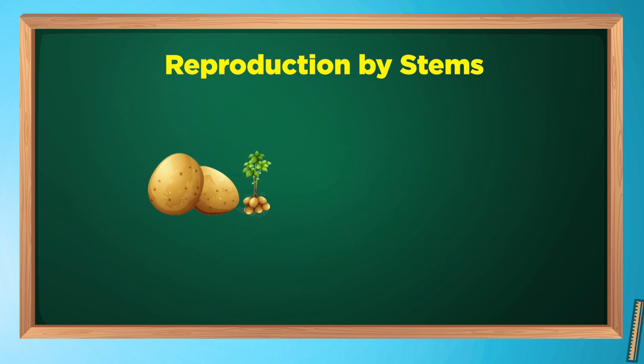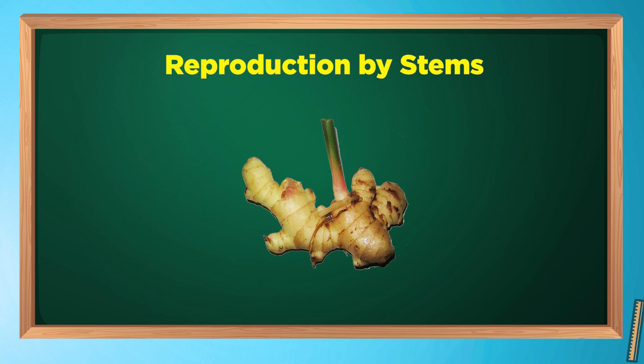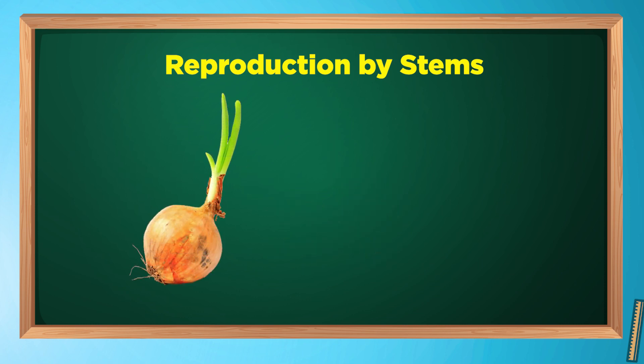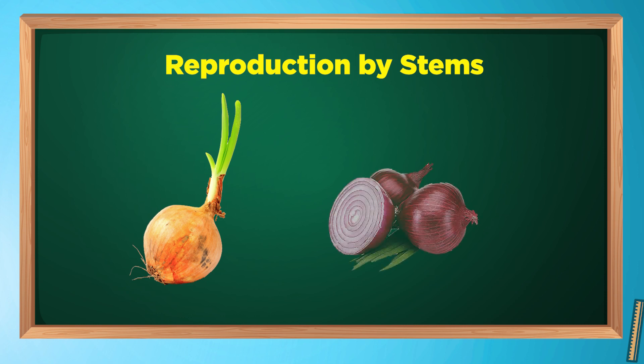Ginger also grows in the same way. Onion is a bulb. The bulb is the underground storage organ made of stems and leaves. The bulbs are made of many layers of fleshy scales, which are actually leaves. The center of the bulb contains a bud, and this bud can grow into a new plant.